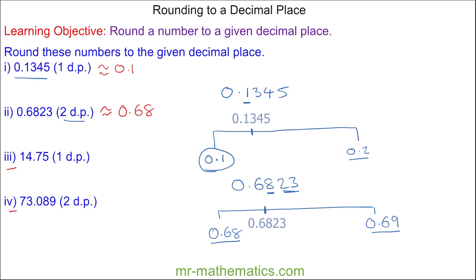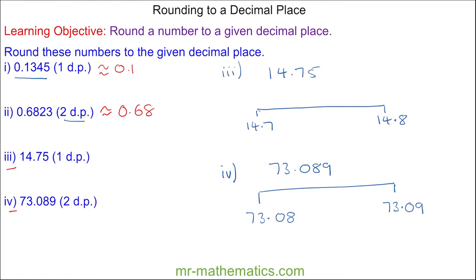Do you want to try and round questions three and four? You can pause the video and resume it when you're ready. For question three, the seven is the first number after the decimal point, so it is between 14.7 and 14.8. The five tells you it's exactly halfway, and because it is halfway we round it up to 14.8.